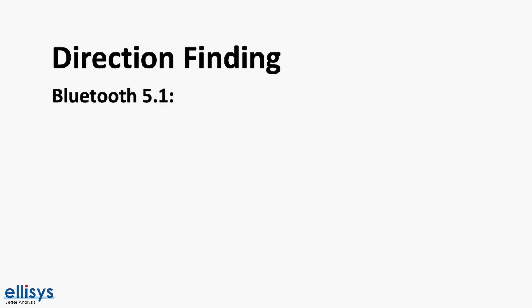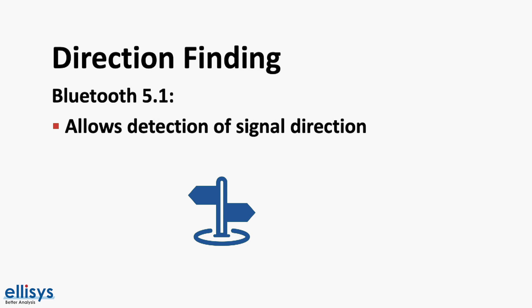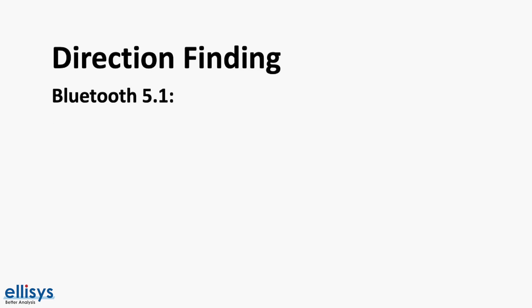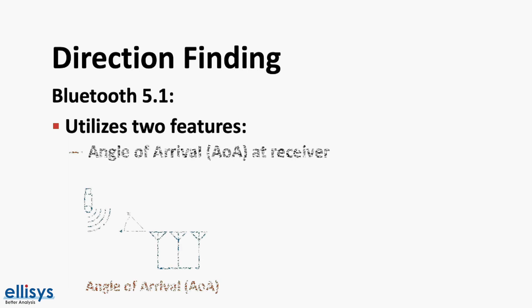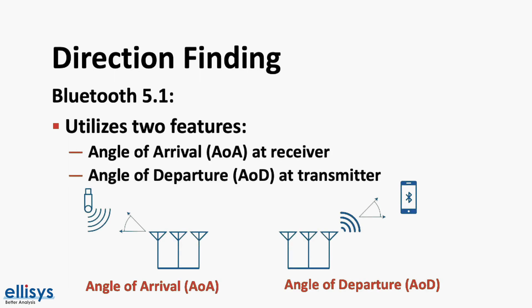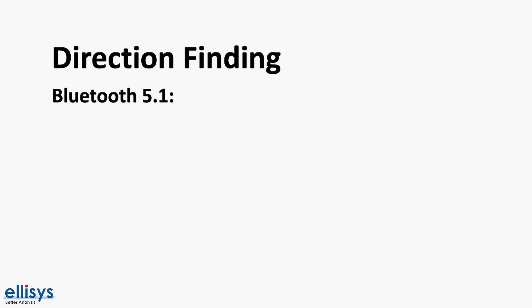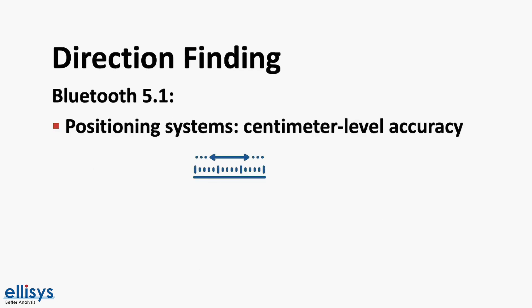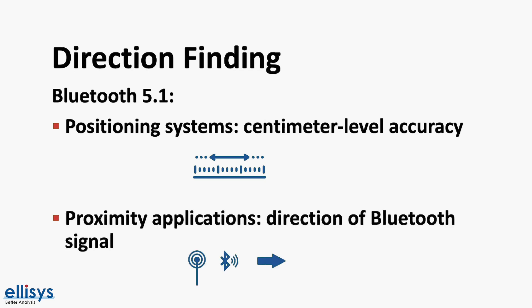Starting with version 5.1, an optional feature allowing the detection of signal direction was introduced. To achieve this, it utilizes one of two new methods: angle of arrival at the receiver end, and angle of departure at the transmitter end. For positioning systems, this helps achieve centimeter-level accuracy, and for proximity solutions it enables detection of the direction of the Bluetooth signal.